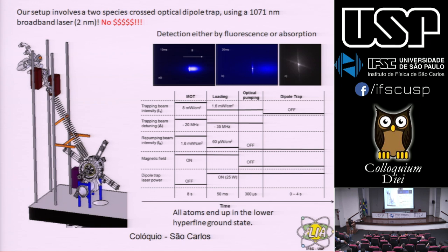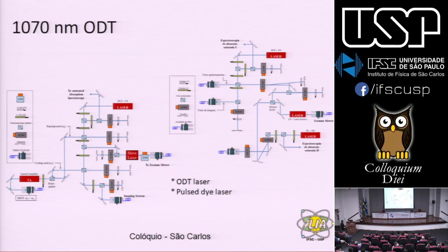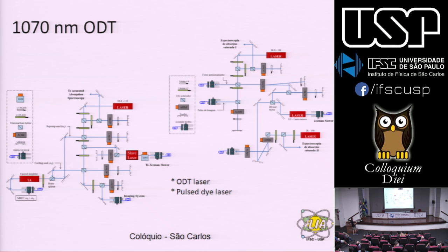Às vezes você tem que agradecer o parecerista da FAPESP quando ele não te dá todo o dinheiro. Eu queria um laser de 100 mil dólares, ele só deu um de 20 mil. Como só podia ter o de 20 mil, tive que comprar um laser de banda larga de 2 nanômetros. A vida lhe dá limões, faça uma limonada. Nessa mesa, havia um elemento óptico a cada 2 centímetros — a mesa tem 3 metros por 1,5. Se você respirou em cima de uma peça, ela custa 500 dólares no mínimo.